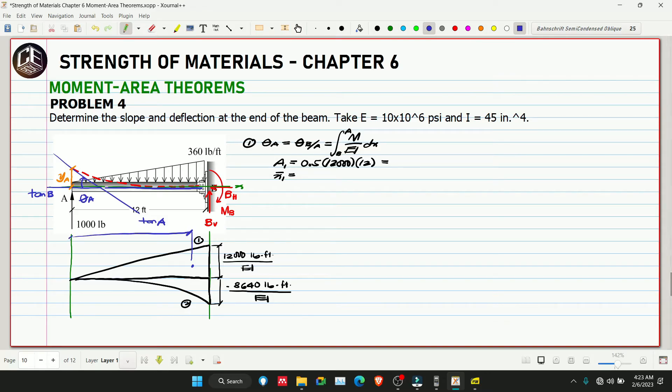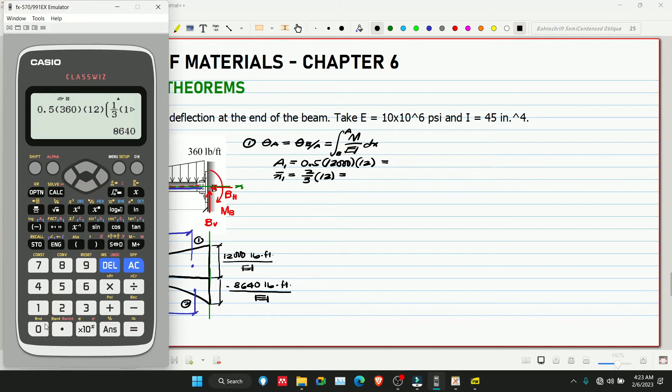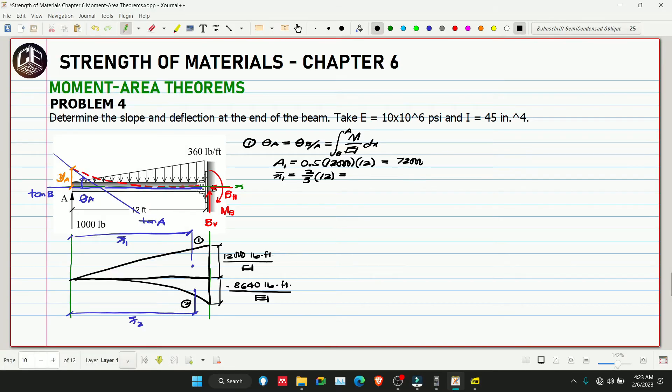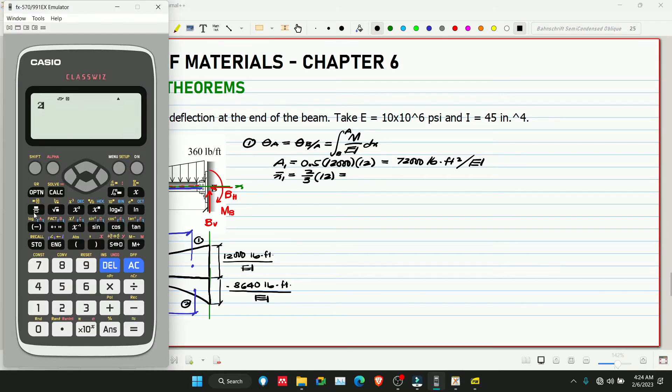This will be our x-bar 1, and this is x-bar 2. So this is two-thirds, two-thirds of 12 feet. So this is 72,000 pound-feet squared over EI. Then this is 2 thirds of 12, so 8 feet.